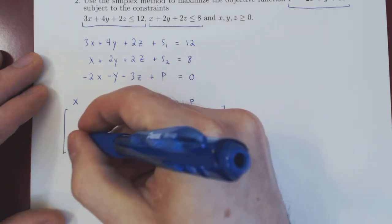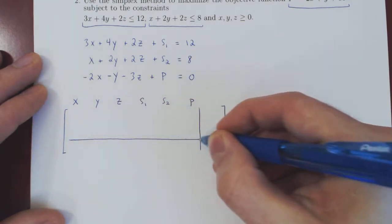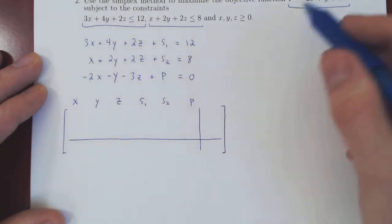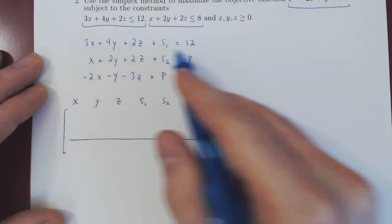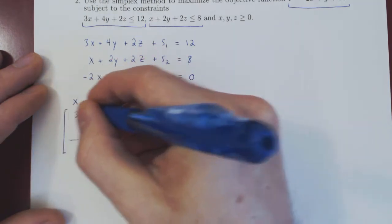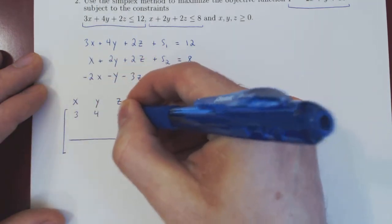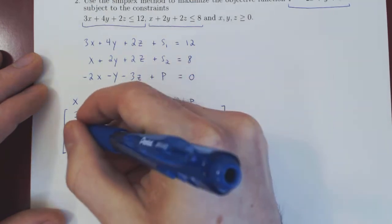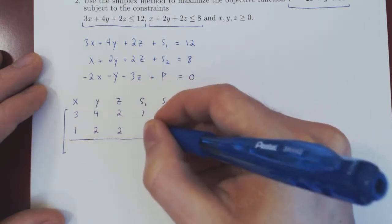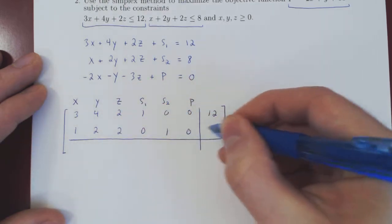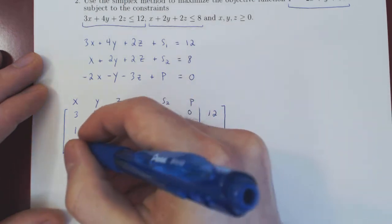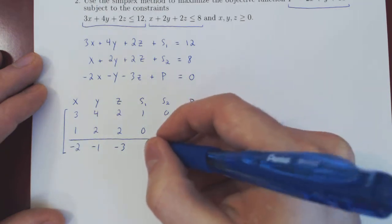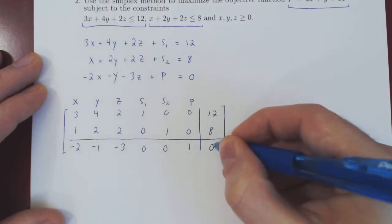We separate the rows coming from the inequalities from the row coming from the objective function. The first row is: 3, 4, 2, 1, 0, 0, 12. Row 2: 1, 2, 2, 0, 1, 0, 8. The third and final row: negative 2, negative 1, negative 3, 0, 0, 1, 0.